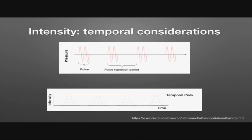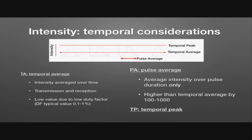The temporal peak value will be much higher than the temporal average, based on the duty factor — about 0.1% to 1% for B-mode and higher for pulse-wave Doppler. The temporal average is intensity averaged over time, including both transmission and reception, giving low values due to the low duty factor. The pulse average is the average intensity over that pulse duration only, which will be 100 to 1,000 times higher than the temporal average. The temporal peak is the single highest value reached within the pulse — not an average over reception and transmission, just that peak value.